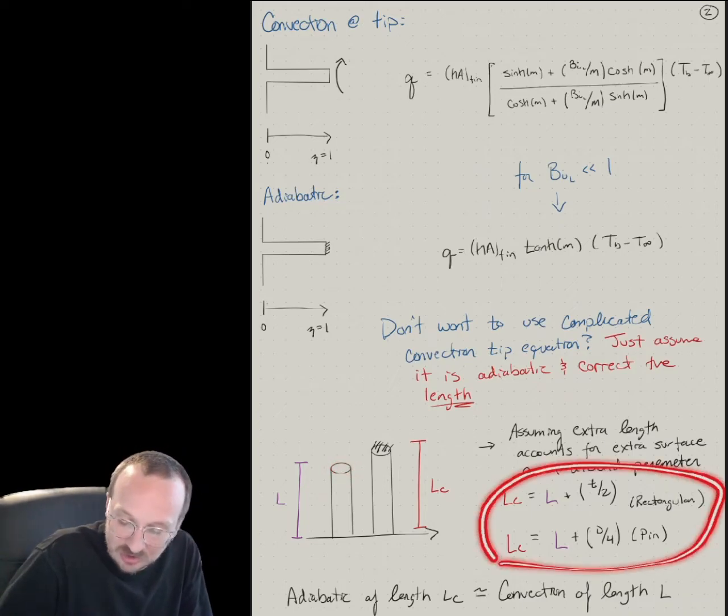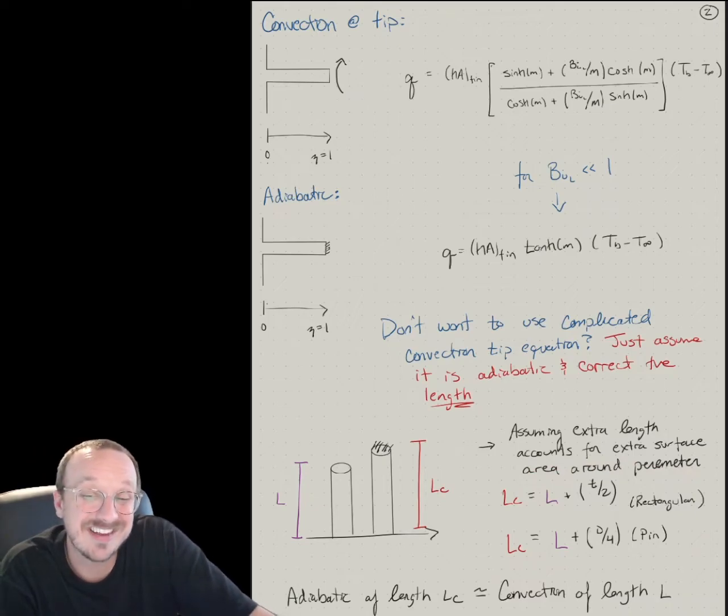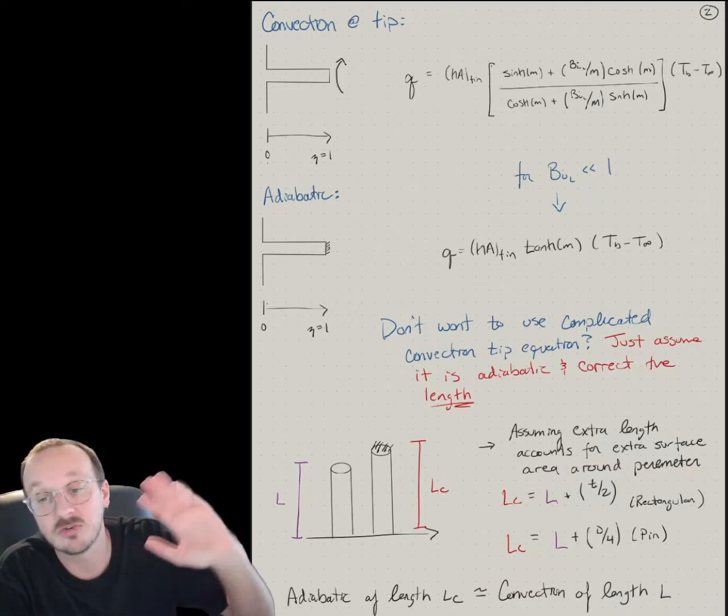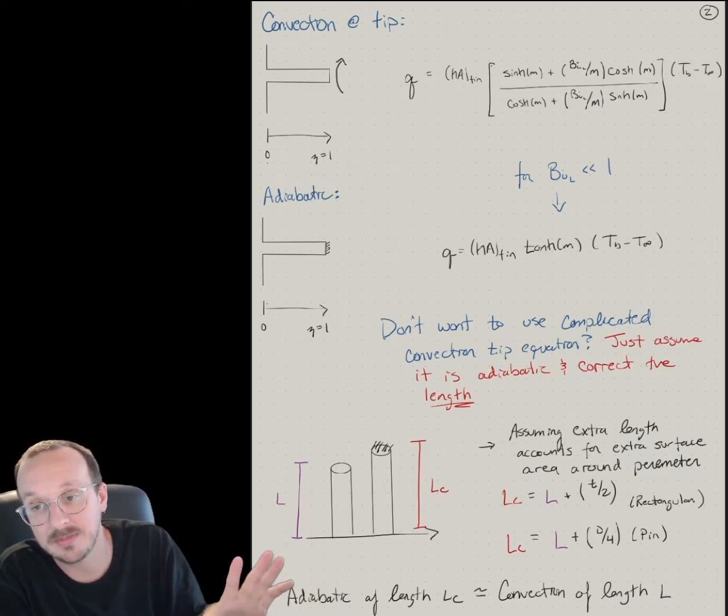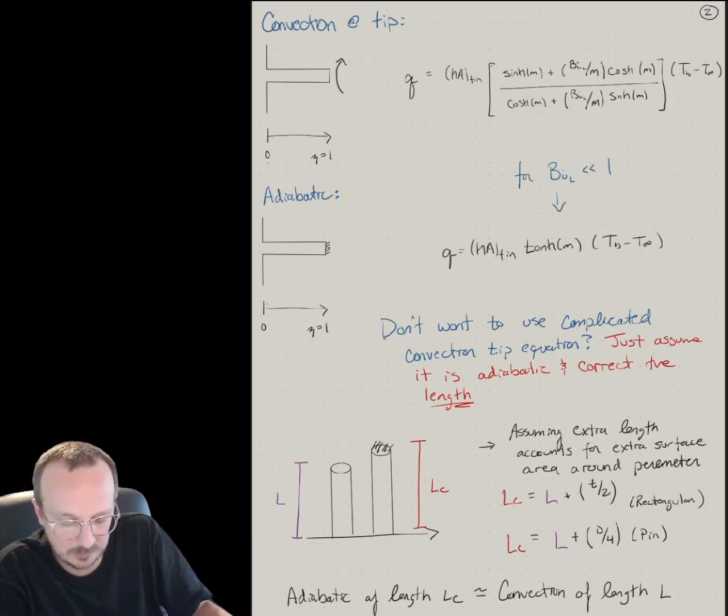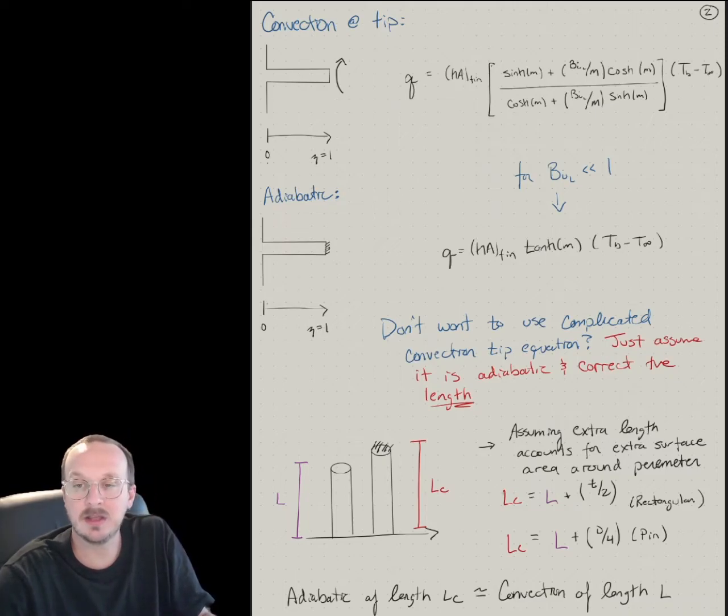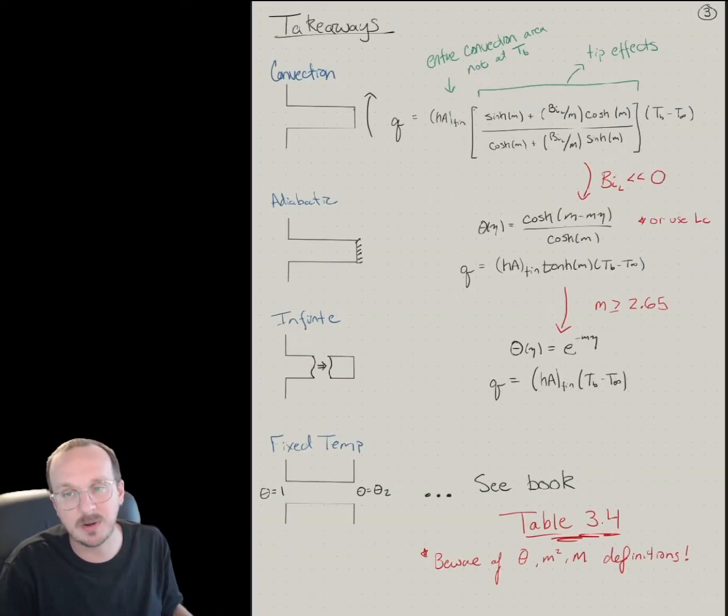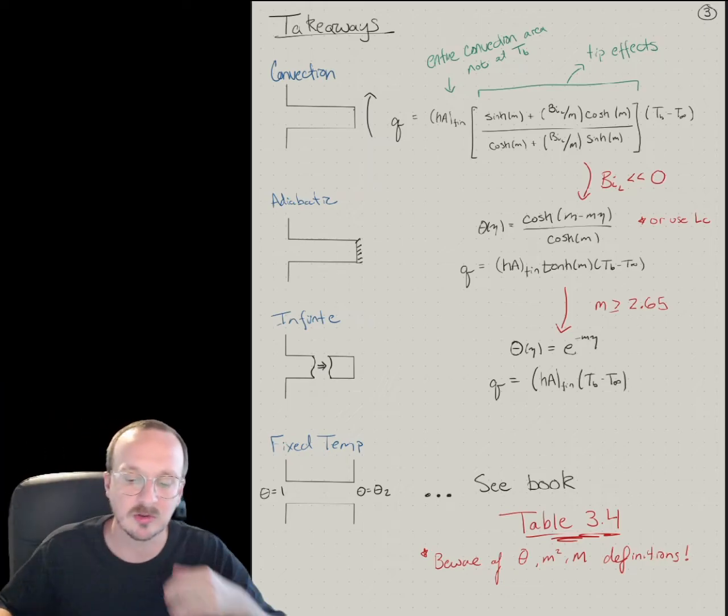So these are the correction lengths you can use. So anytime you see a problem, or if it doesn't say that it's an adiabatic fin, you can just use an adiabatic fin with the corrected length. And then your math equations are much easier than using the convection fin tip. So that's the idea with convection. And I want to give you a summary now of what we've talked about in terms of the boundary conditions for a fin of uniform cross-sectional area.